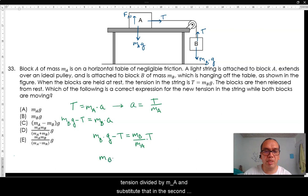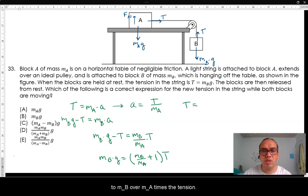Little algebra here. MB times G is equal to MB over MA plus 1 times the tension. This is the same as saying, tension is equal to MB divided by MB plus MA over MA times G.